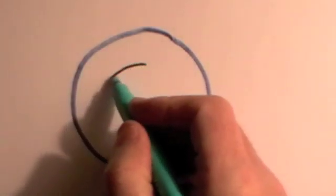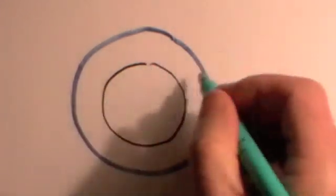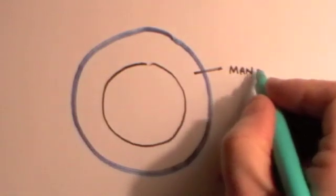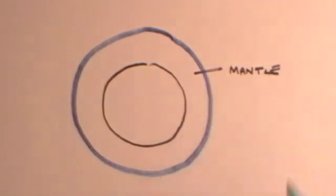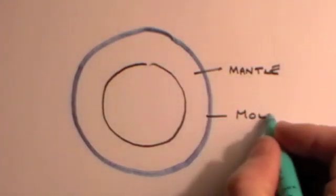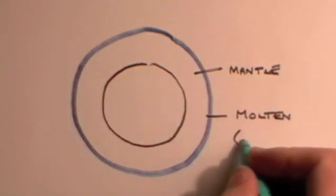Then underneath the rocky crust there's a layer called the mantle. It's basically hot rock, sometimes molten rock, and where it's molten, that means it's almost liquid form, that is called magma.